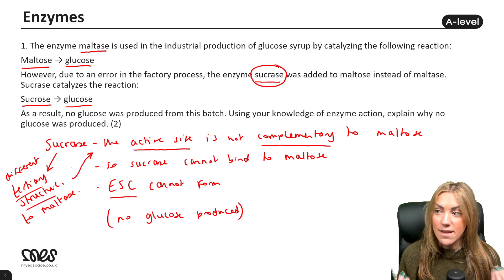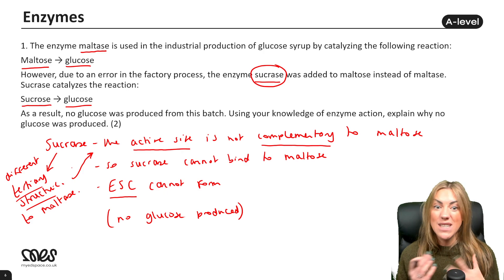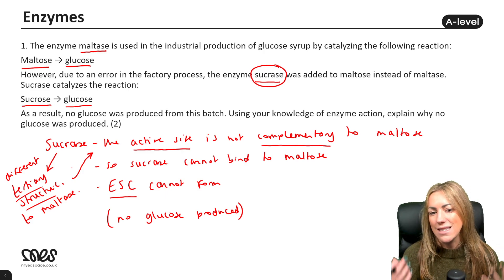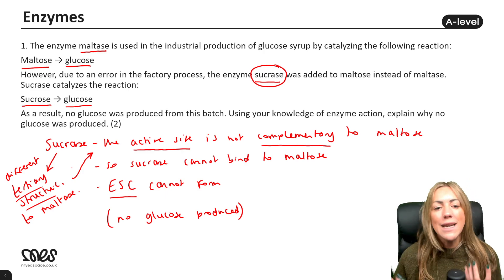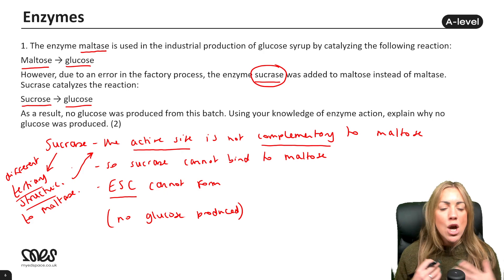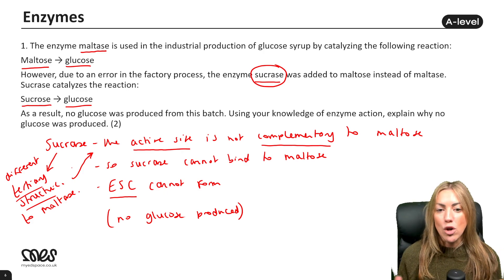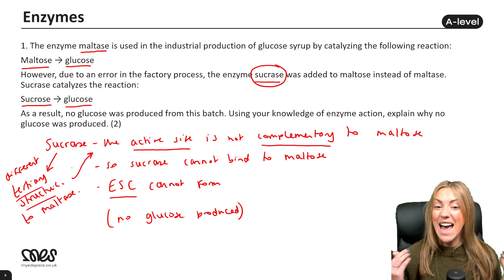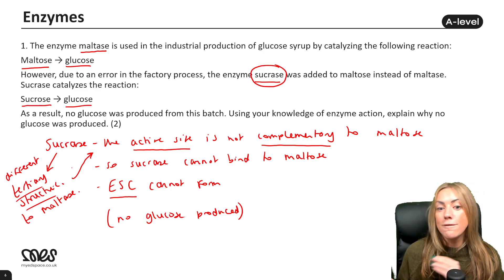Remember enzymes are specific — sucrase is specific for sucrose, and maltase is specific for maltose, so you can't use a different enzyme to catalyse the same reaction. We're going to post another video about factors affecting enzyme-controlled reactions, covering temperature, pH, enzyme concentration, substrate concentration, and enzyme inhibitors, so make sure to watch that as a follow-up.